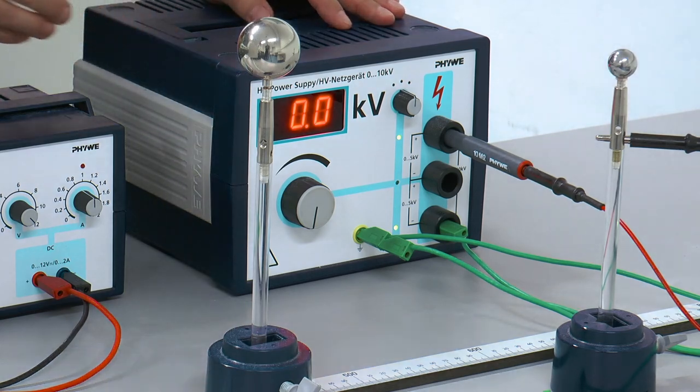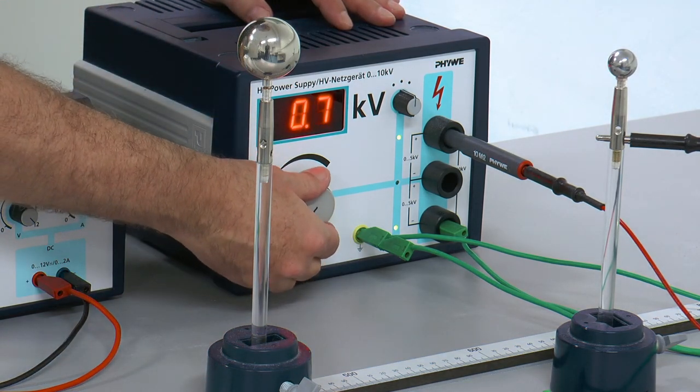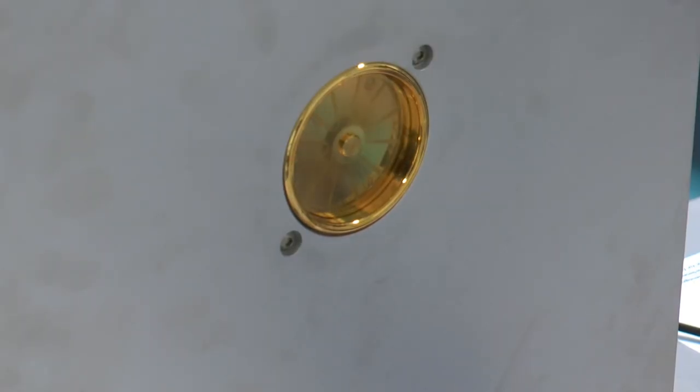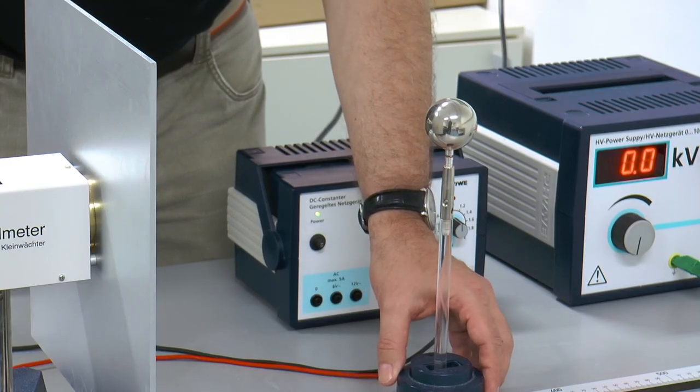The sphere to be measured is placed on the scale with the electric field meter inserted in the metal plate. The charged sphere is operated at up to 10 kV.